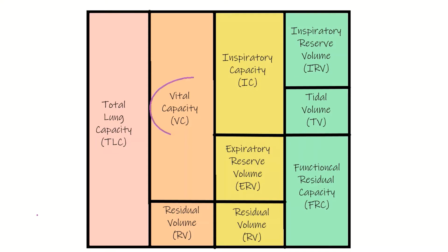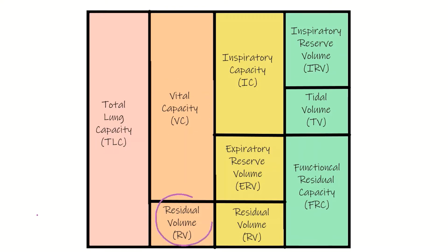Then we come up to vital capacity. Let's say you breathe in as much as you can, and then you breathe out as much as you can. All that air that you're able to breathe out is the vital capacity. But there's still going to be some air that you can't get out — that's the residual volume that's left over, and that is the amount that cannot be measured through spirometry.